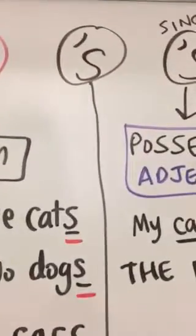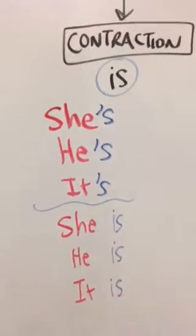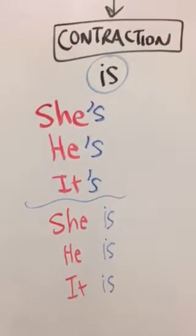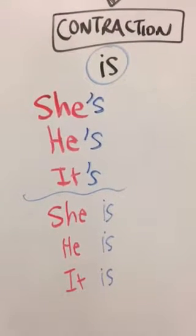Now we can have an apostrophe S. Sometimes that's a contraction with is. She's, he's, it's. She is, he is, it is.